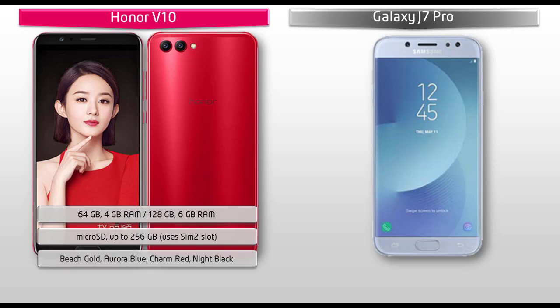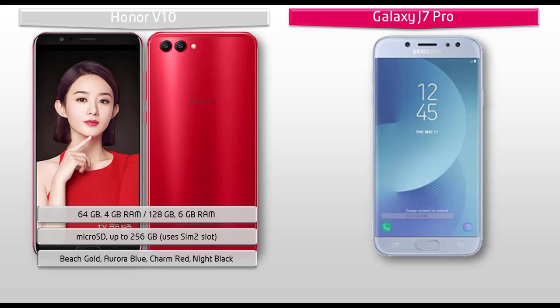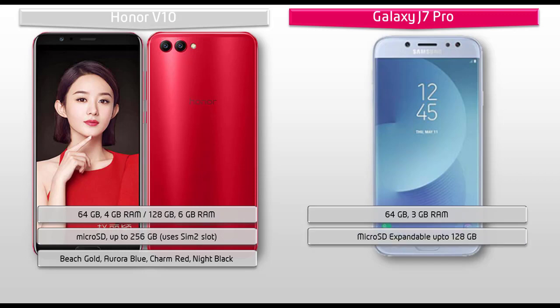Keeping in mind the device color options, Huawei has produced Honor V10 in Beech Gold, Aurora Blue, Charm Red, and Night Black colors. While Galaxy J7 Pro is available in 64 GB of built-in storage with 3 GB RAM and also supports microSD extended up to 128 GB. Samsung has launched this device in only black and gold colors.